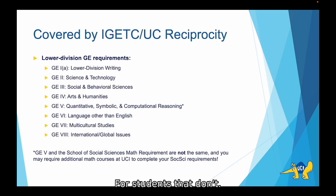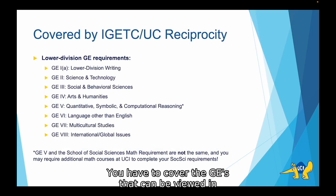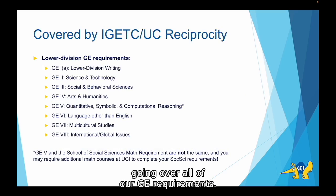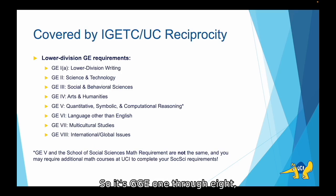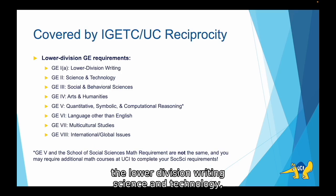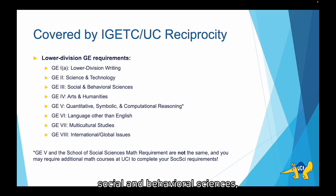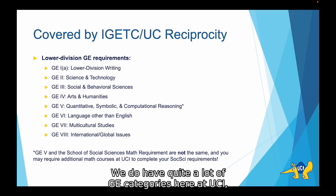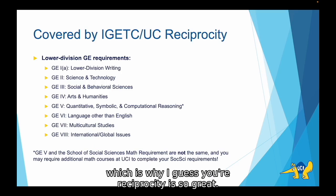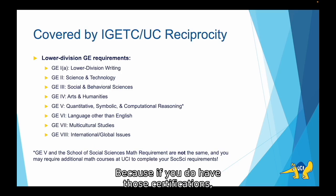For students that don't have IGETC or UC Reciprocity, you have to cover the GEs — that can be viewed in a separate video we have specifically going over all of our GE requirements. For those that do have IGETC or UC Reciprocity, the GE categories covered are pretty much everything: GE one through eight, including lower division writing, science and technology, social and behavioral sciences, arts and humanities, quantitative symbolic and computational reasoning, language other than English, multicultural studies, and international global. We have quite a lot of GE categories here at UCI, which is why IGETC or Reciprocity is so great — if you have those certifications we basically clear all of these for you.